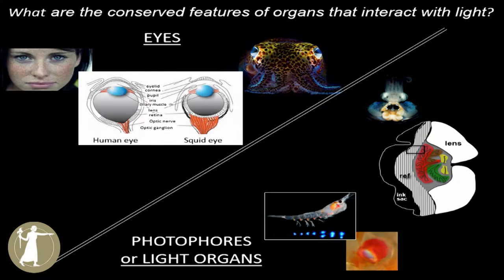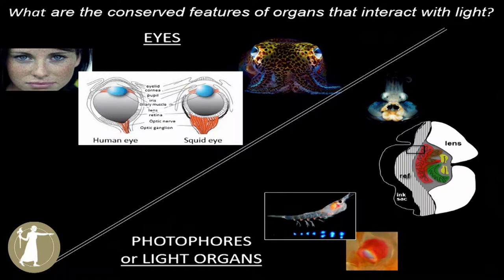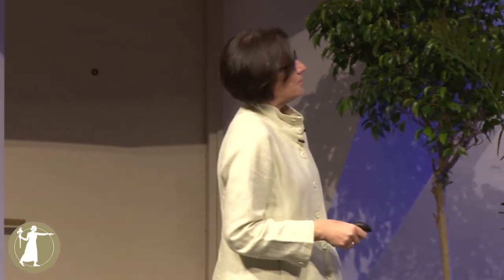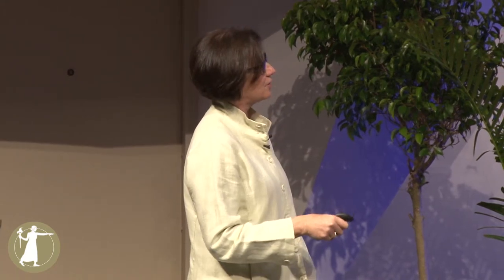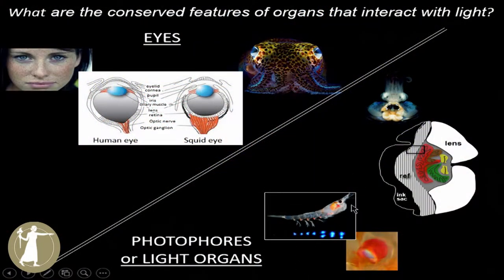Since I was a postdoc in Joe Horwitz's lab at UCLA, my lab has studied the conservation of features of organs that interact with light. It's been long known that there's tremendous convergence in form and function of the eyes of vertebrates and the eyes of octopus and squids. But those tissues are also very convergent with photophores — the other types of organs that interact with light. Instead of photoreceptive tissue like the retina, you have photogenic tissue, which is the luminous tissue. There's a lot of convergence between these two types of organs and they often have the same types of modifiers.